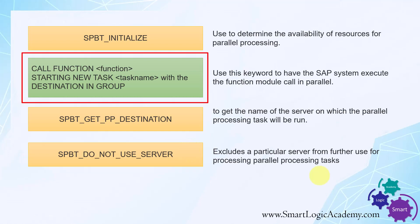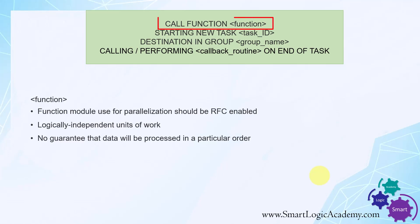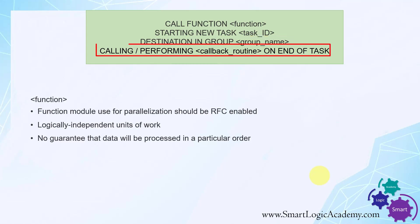Now let's check the syntaxes used in this parallel processing technique. The syntax is: keyword CALL FUNCTION, then specify your RFC-enabled function module to execute in parallel; keyword STARTING NEW TASK, then specify the task ID; keyword DESTINATION IN GROUP, then the parallel processing group name; keyword CALLING or PERFORMING, then either a method name or a subroutine name; and keyword ON END OF TASK. This is the complete syntax to execute a function module in parallel.